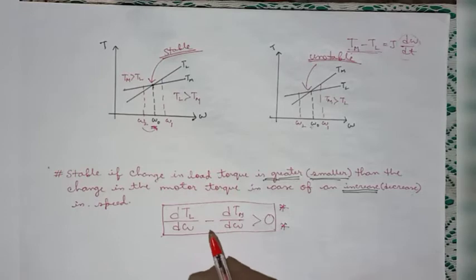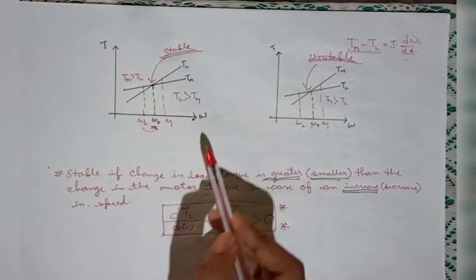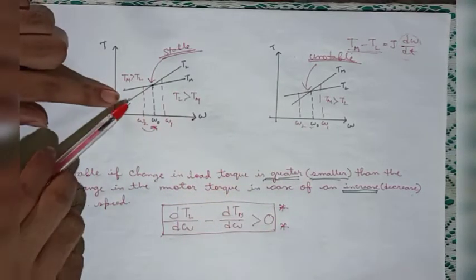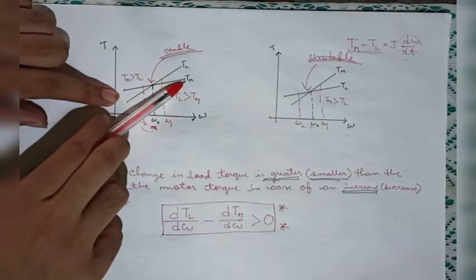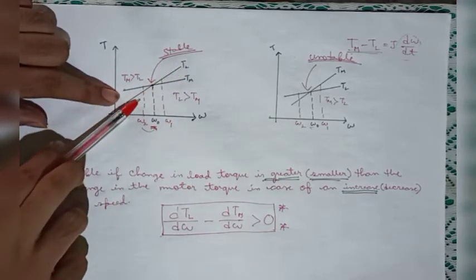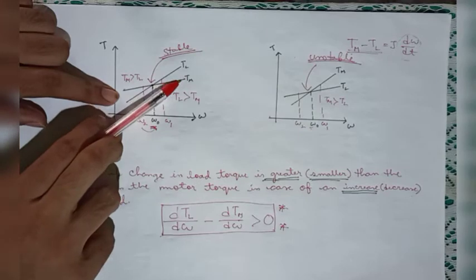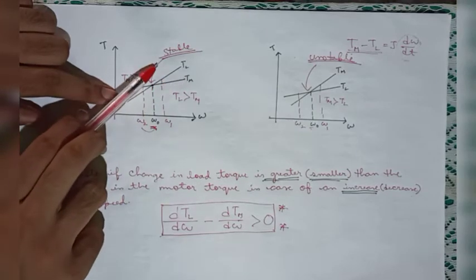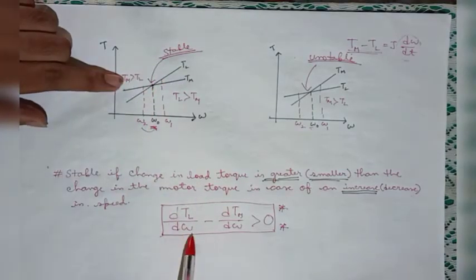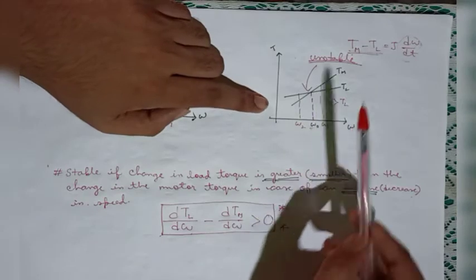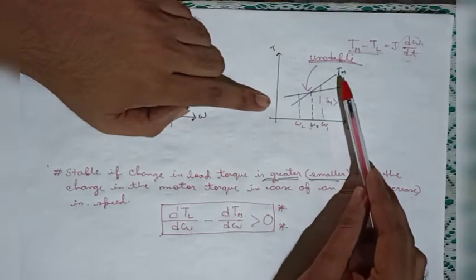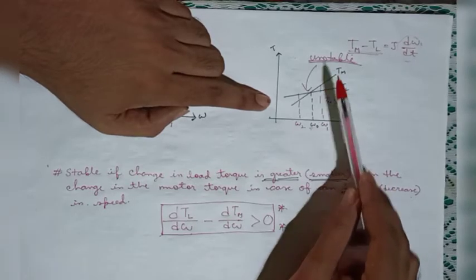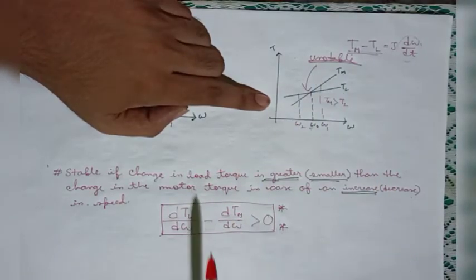You can verify this condition in both cases. In the first case, the slope of the load torque curve is greater than the slope of the machine torque curve, so this condition is satisfied — it is stable equilibrium. In the second case, the slope of the load torque curve is less than the slope of the machine torque curve, so the condition is not satisfied — it is unstable equilibrium.